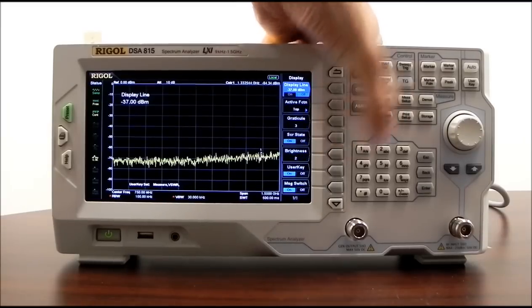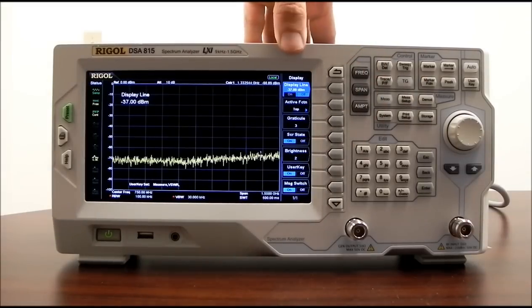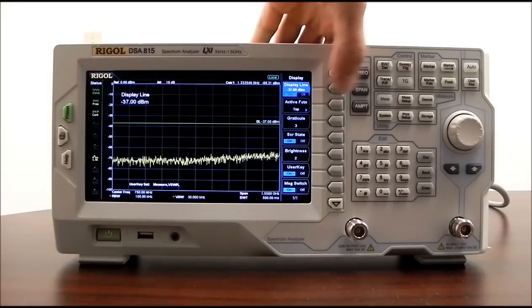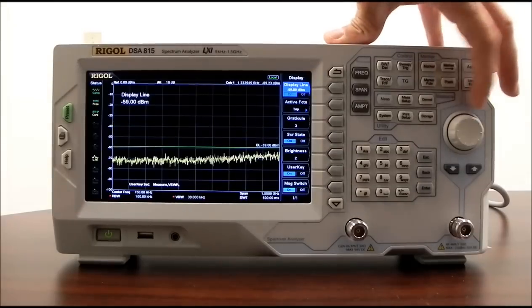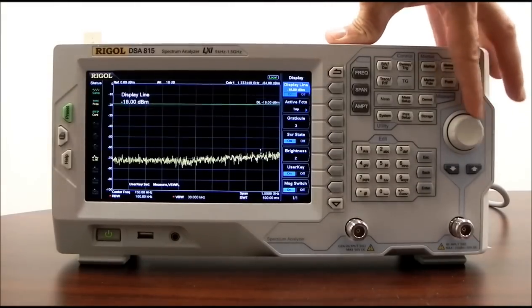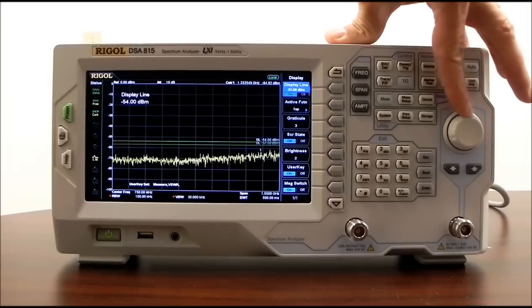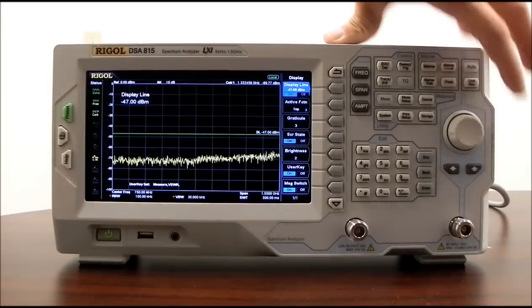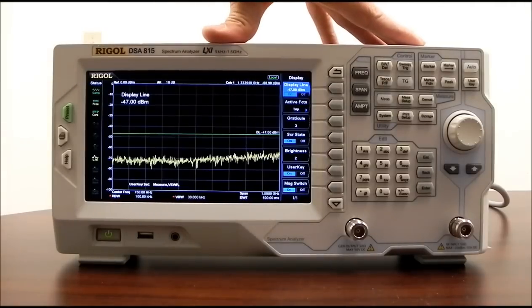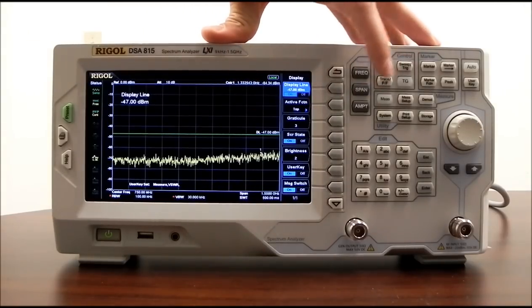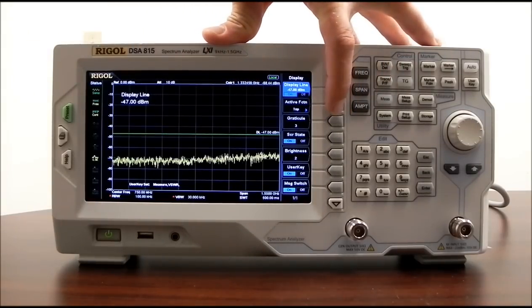And now let's go to the display. With display, we have a display line that we can activate. The display line is shown here. Display lines can be used for pass-fail, can be used to set baselines, and be able to highlight or indicate an area that you want to focus on. We can move the active function.